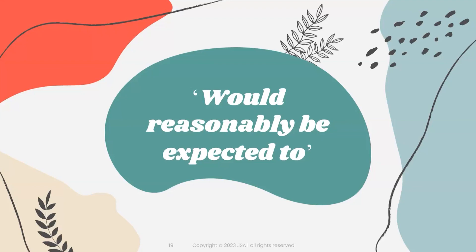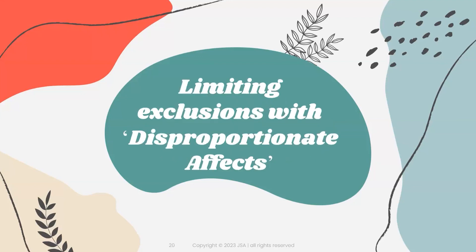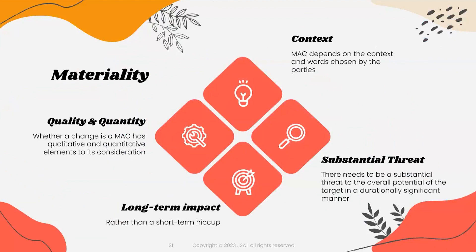When drafting your clauses, think about how objective you want to be or whether you would like to insert some subjectivity. The limitation on exclusions through the disproportionate effect concept asks whether the target is an outlier or keeping up with its peers and industry. This is a very important concept — limitation to the exclusions. You will find this coming up very much in drafting today. Now we move on to another very important concept: materiality — the 'M' of a MAC.